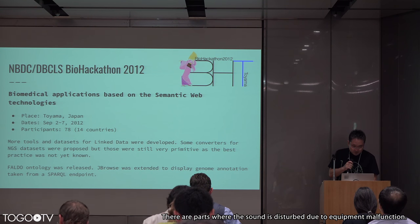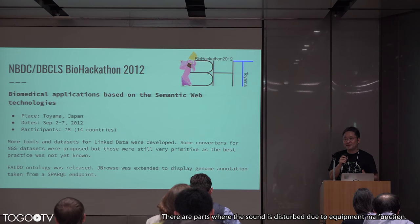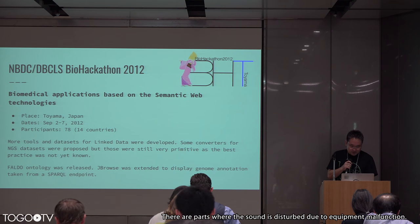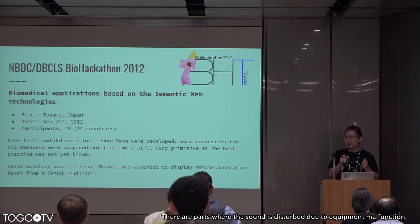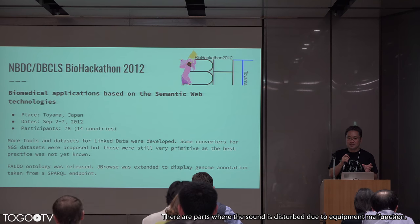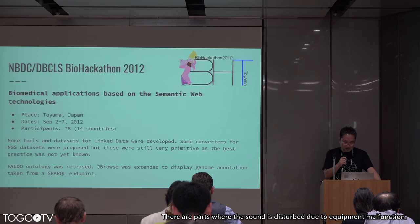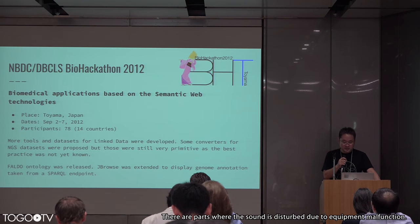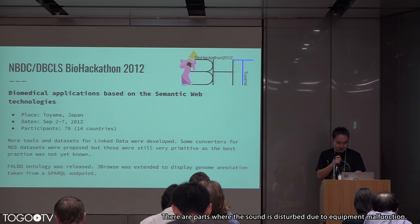Those implementations were still very primitive because we didn't yet know the best practices for how to implement and publish linked data in RDF. At the same time, we created part of the FALDO ontology — a sequence annotation ontology used to describe the location of sequences, allowing statements like 'this gene is located on chromosome 2 from this position to this position.' JBrowse was extended to display genome annotations taken from SPARQL endpoints, a big step toward practical use of semantic web technologies in genomics databases.